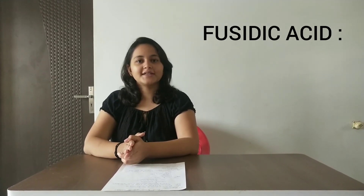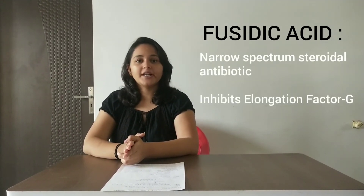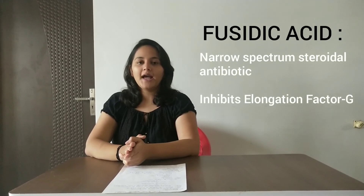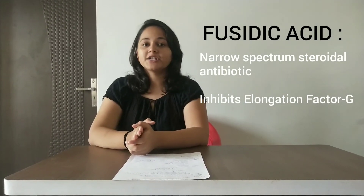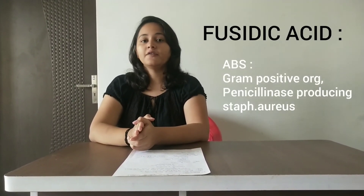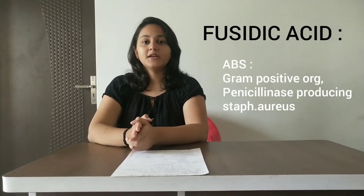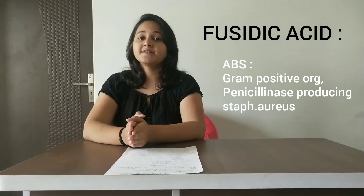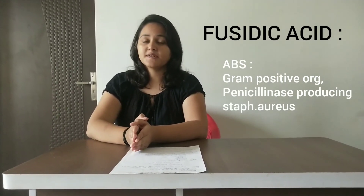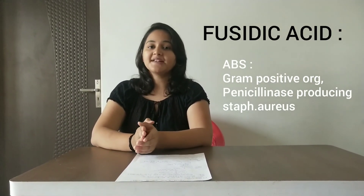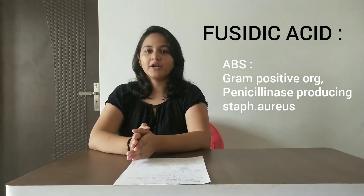The last drug we will discuss is Fusidic Acid. Fusidic Acid is a narrow-spectrum steroidal antibiotic and it inhibits elongation factor G (EF-G). It is highly active against gram-positive organisms and also penicillinase-producing Staph aureus.